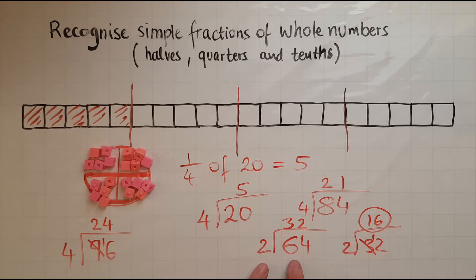So a quarter of 64 is 16. So you choose yourself. You choose whether you cut the number in half first and then half again or divide by 4.